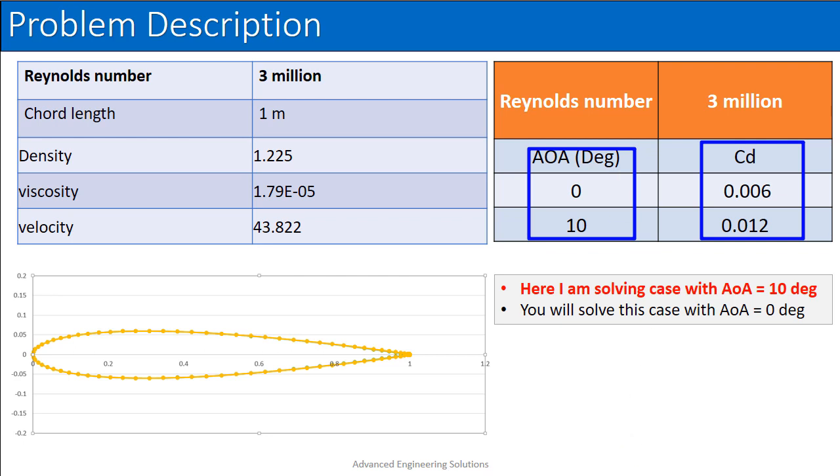And I will just solve the case for the 10 degrees angle of attack and based on the same method you can solve the case for the angle of attack of 0 degrees. And after that you can compare the results with the results given here. So I will compare the results for 10 degrees and then you will compare the results with the 0 degree angle of attack flow.